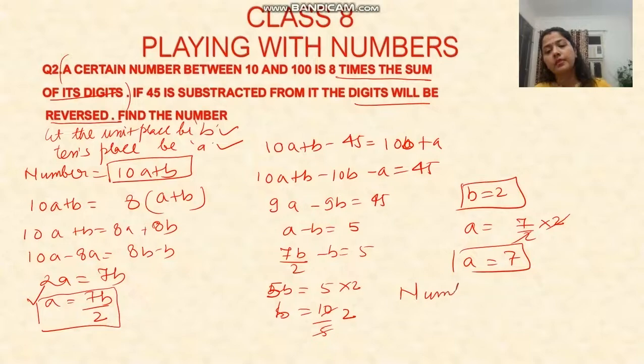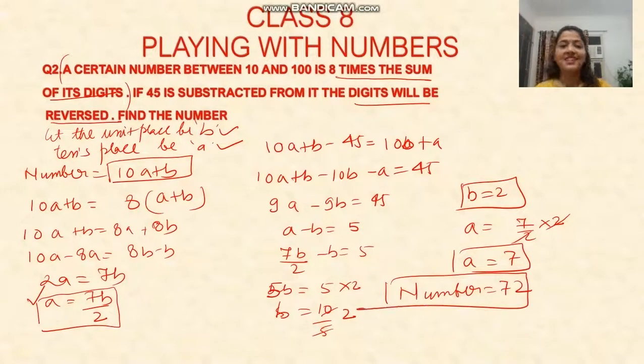So what will be our number? The number will be 72. This will be your answer. See, if you understand, how easy it is to solve the question.